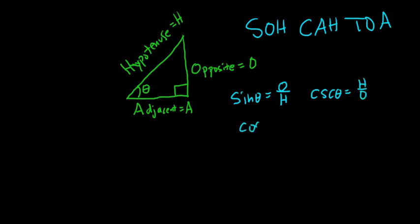Cosine of theta. So it's SOH-CAH-TOA. So it's A over H. A over H. And then secant is the reciprocal. So it's HA.